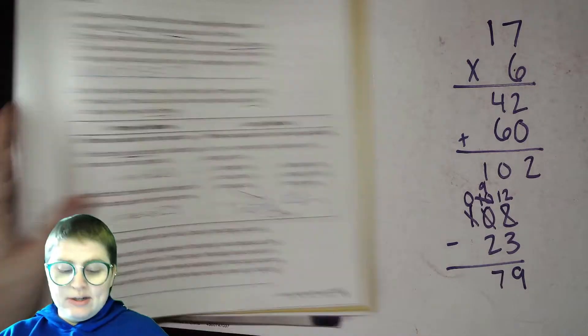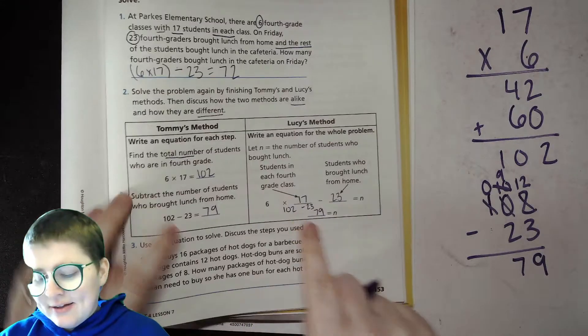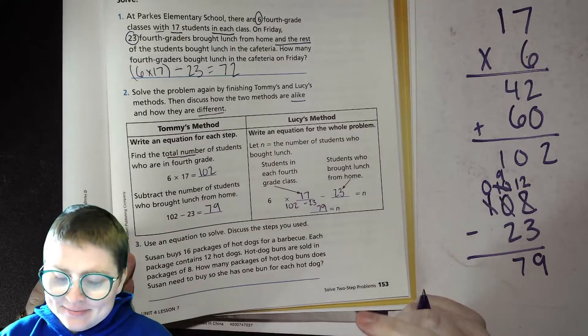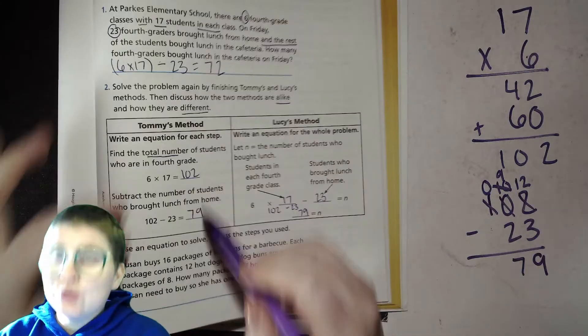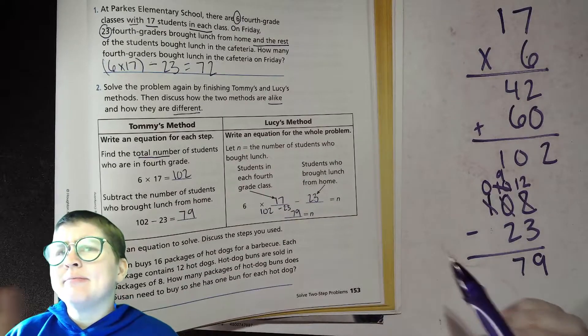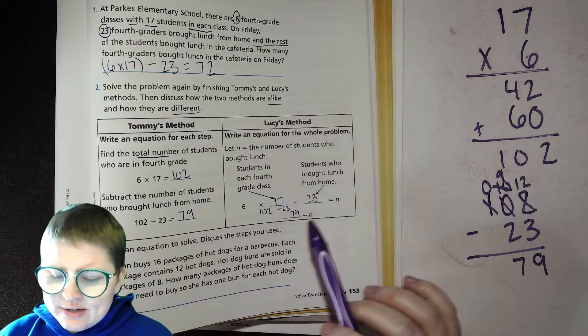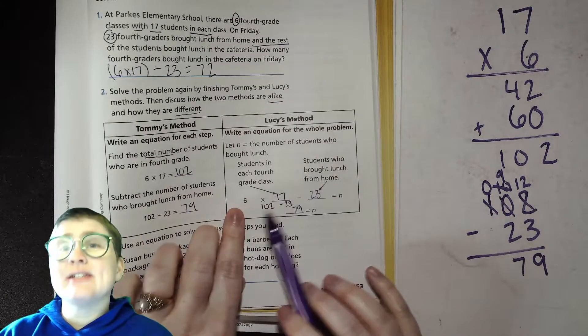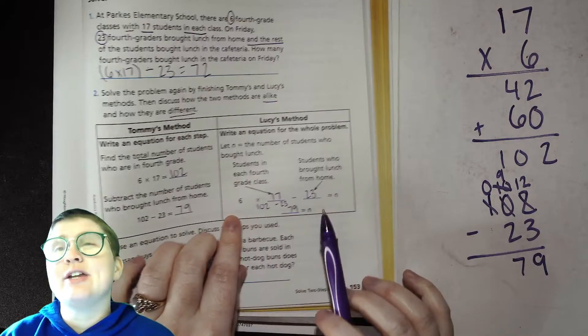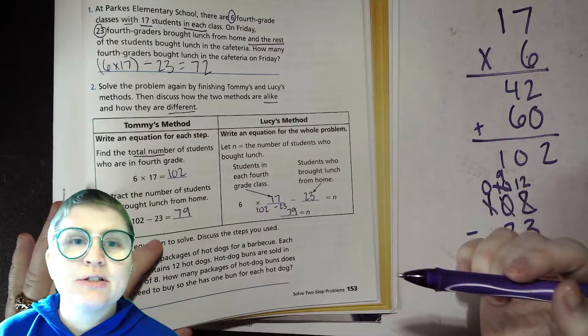So what do they have in common? Well, first you had to find the total number of kids, and then you remove the kids that brought lunch from home, right? They did it differently. He wrote it in two lines. She wrote it all in one line. They're both mathematically correct and valid. Often though, as you get older in math, you'll see more things, multi-step equations, where you have both of the steps written in one equation, and you have to use that order of operations to figure out what you're going to do first.